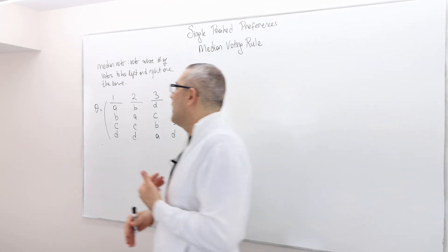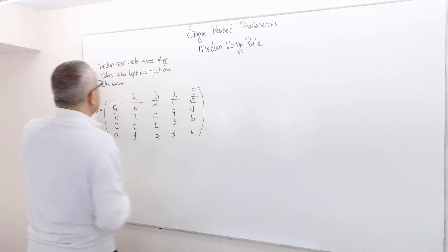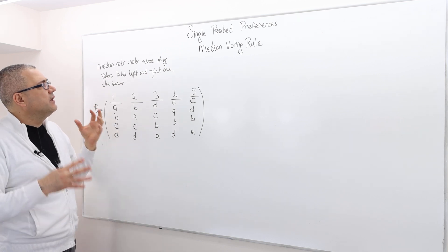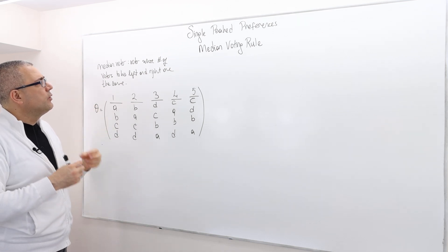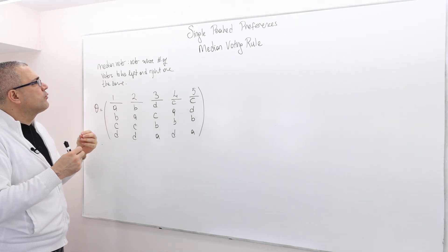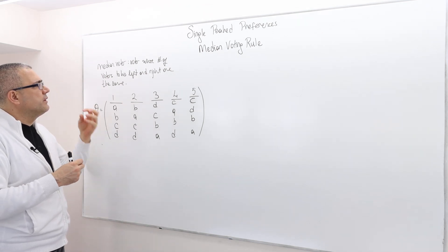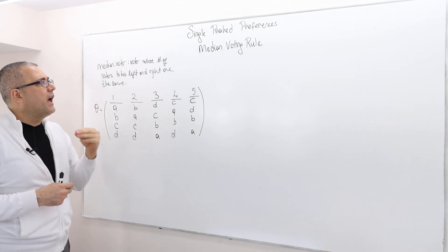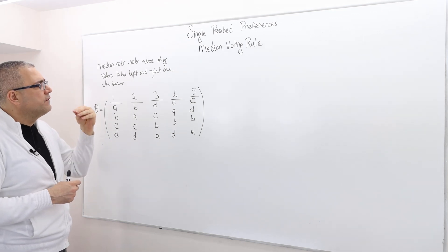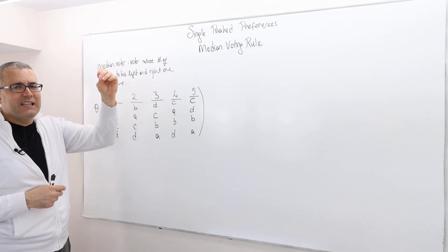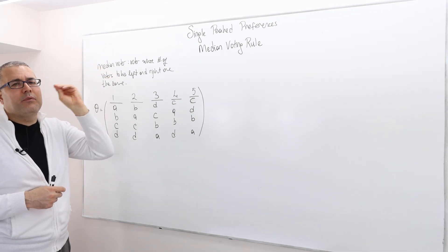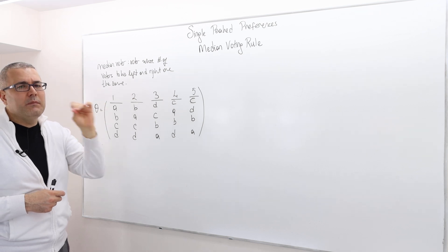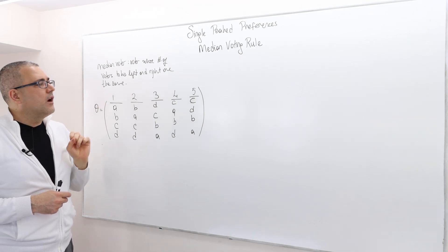How does it work? The median voter is basically the voter whose number of voters to his left and right are exactly the same. And so the median voting rule selects the top alternative of the median voter.